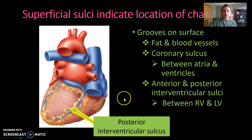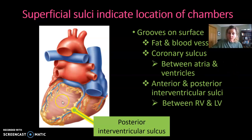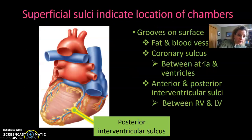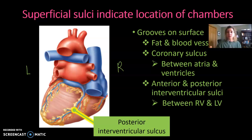When we flip the heart over to look at the posterior aspect, remember: it's just as if you were looking at someone who has turned their back on you. So their left is your left and their right is your right. The left side of the heart is on this side, and the right side is on the other. The posterior interventricular sulcus is on the backside of the heart and also divides the left ventricle from the right ventricle. So even looking at the surface of the heart, you can use these landmarks to tell which side is left and which is right.